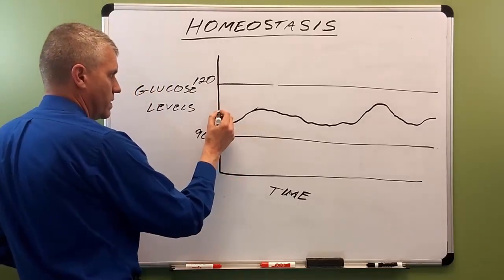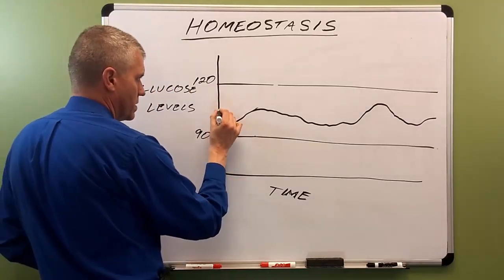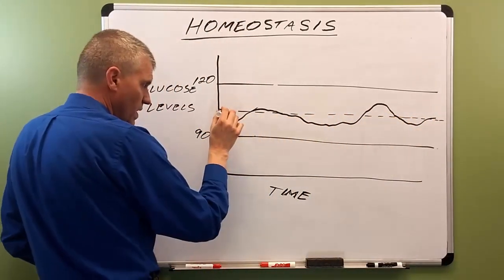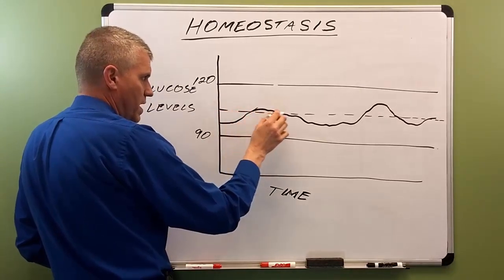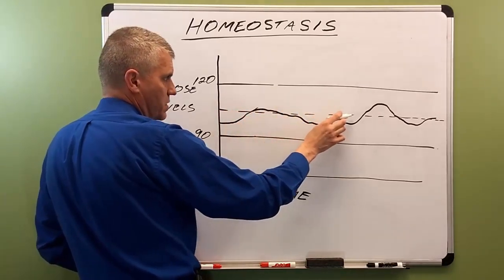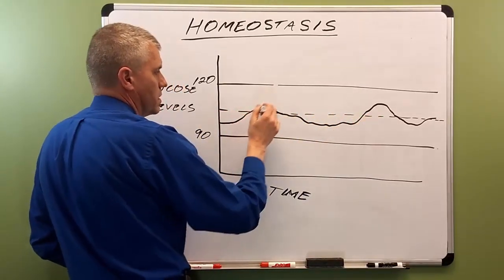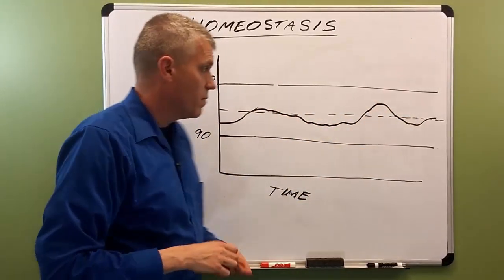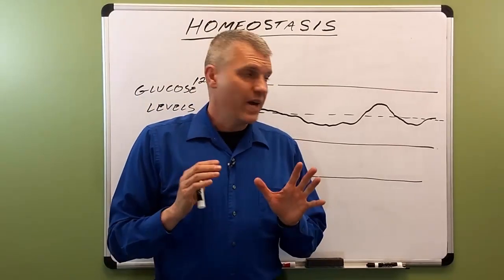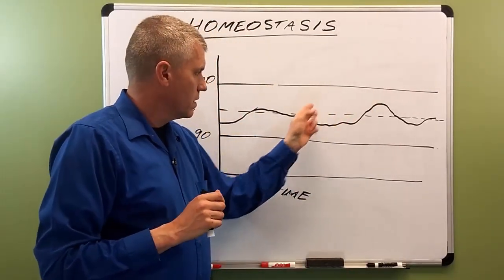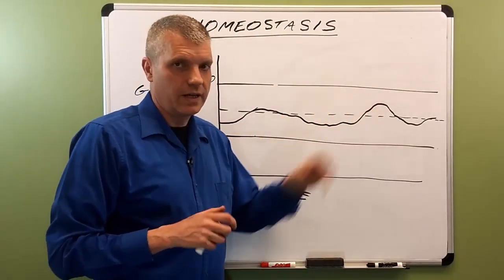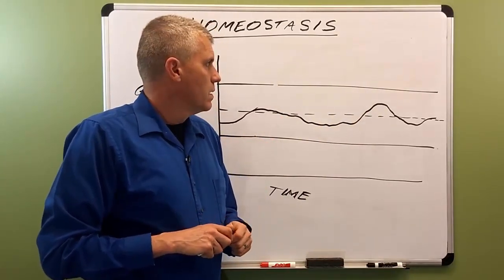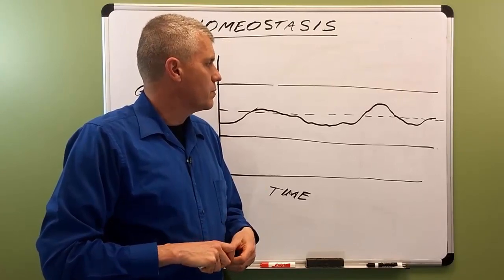Set point is something often mentioned when talking about homeostasis. Imagine a dashed line — that's where the body is trying to keep glucose. The blood glucose is varying around that dashed line. We determine the set point based on the average of these variables over a given length of time. That's how we figure out what the set point is supposed to be.